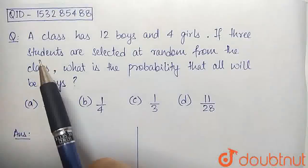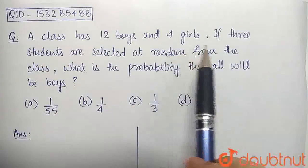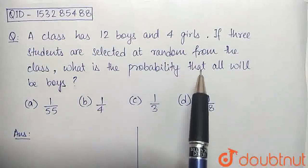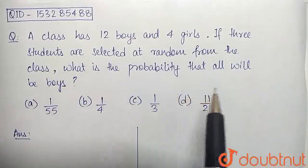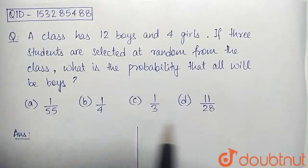The question given here is: a class has 12 boys and 4 girls. If 3 students are selected at random from the class, what is the probability that all will be boys? The options are given.